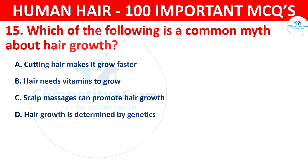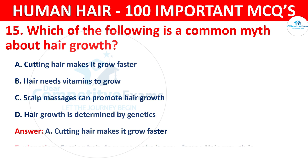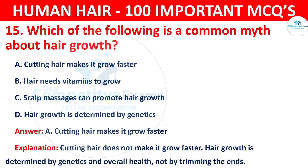The correct answer is A — cutting hair makes it grow faster. Cutting hair does not make it grow faster. Hair growth is determined by genetics and overall health, not by trimming the ends.